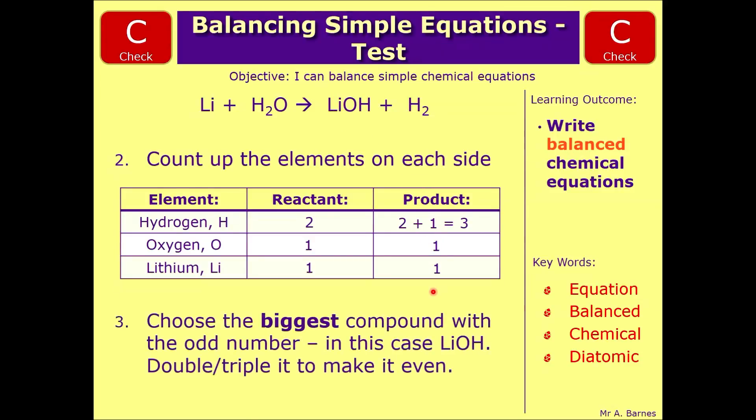Step three is to choose the biggest compound with the odd number, which in this case is lithium hydroxide. It could be that or water but I would usually go with lithium hydroxide because it's got more elements in, and then either double or triple it to make it even. In this case we're going to double it so we'll have two LiOH.